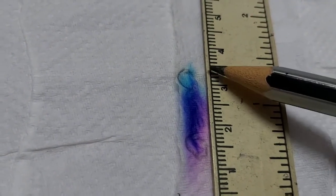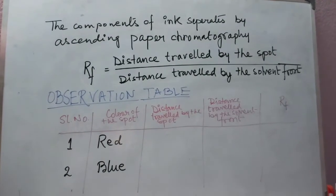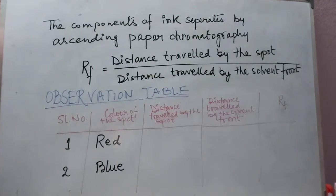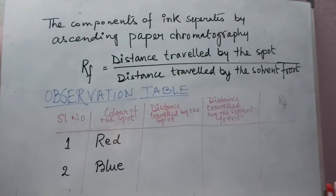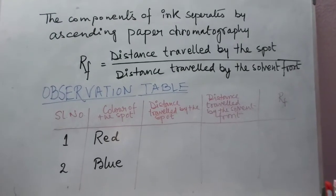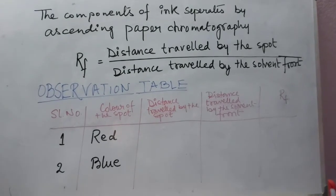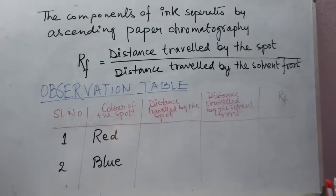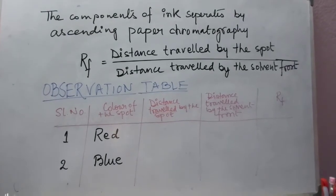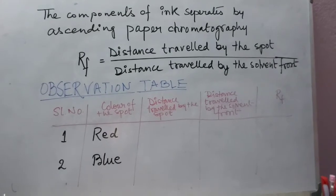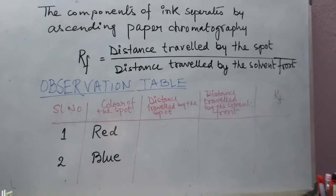Let's talk about the observation table. Now you can see the different color spots in this particular experiment: one is red, another one is blue. The components of ink separate by ascending paper chromatography, where the Rf value is denoted by the distance traveled by the spot and the ratio of distance traveled by the solvent front. So let's talk about this observation table.